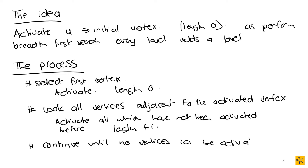You continue until no more vertices can be activated. In this case, you're performing the breadth-first search on your entire graph and giving levels as you process, which gives you the shortest path lengths from U to all other vertices. Obviously, if you're looking just for the shortest path from U to V, you could stop at V — you don't have to continue. We'll look at that when we do the examples.